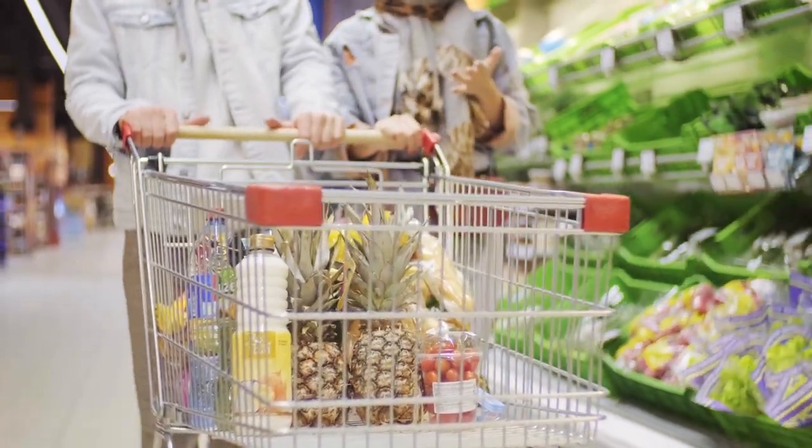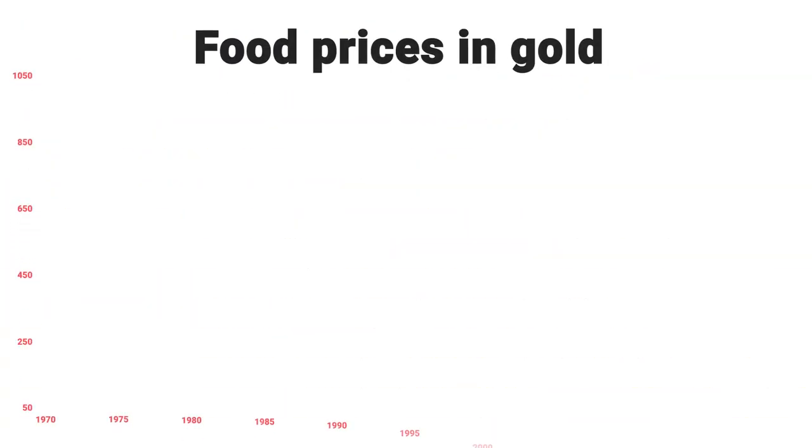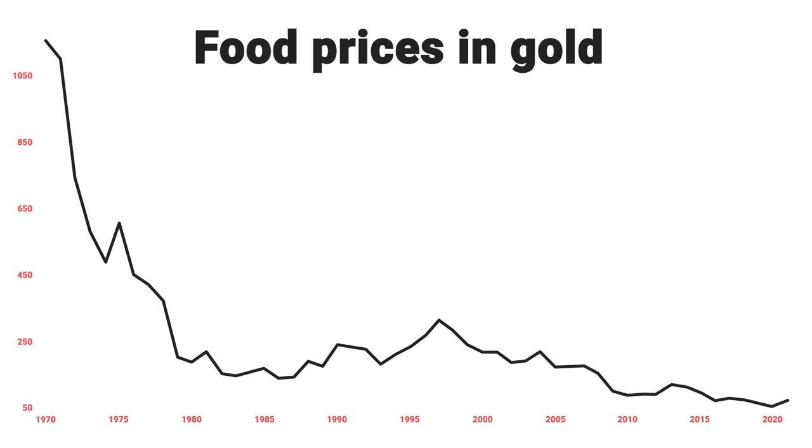You can do the same for other goods. Food prices go up every year in pounds because of inflation, but if you look at food prices in gold they become dramatically cheaper over time. And when you think about it, this is exactly what you'd expect — over time we get better at producing things, more efficient, technology improves, so you'd expect prices to come down. The only reason prices actually go up is that the value of the pound you're measuring everything in is falling.